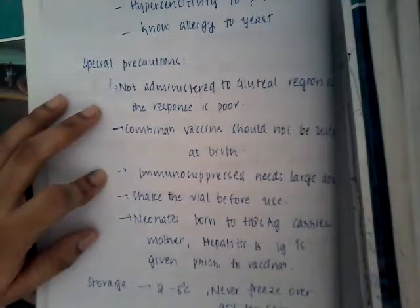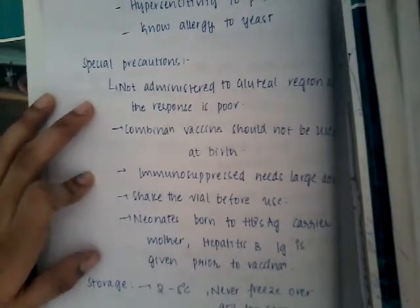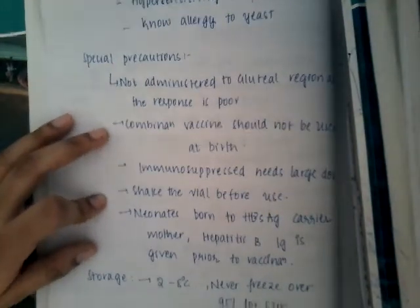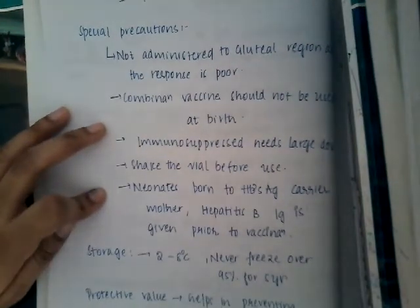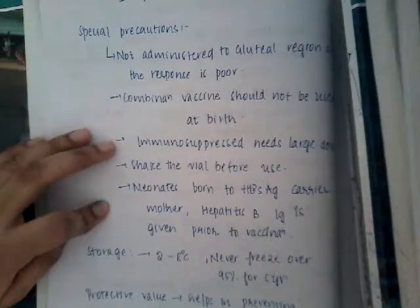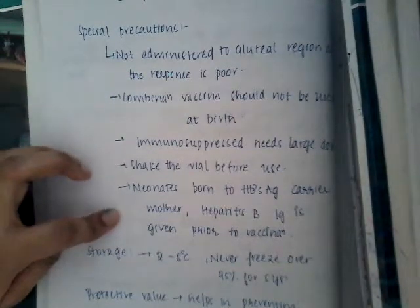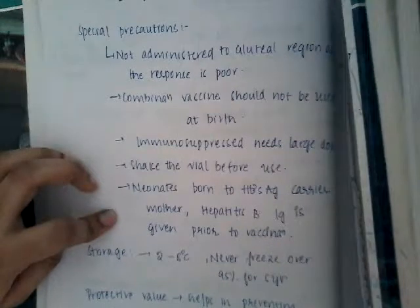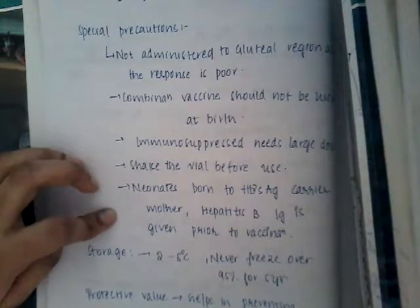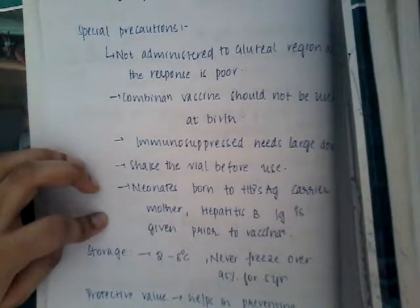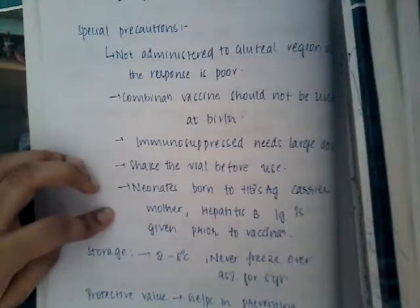In immunosuppressed individuals, higher doses will be required. Always shake the vial before use. In neonates born to a Hepatitis B surface antigen carrier mother, Hepatitis B immunoglobulin is always given prior to vaccination. Always give the neonate Hepatitis B immunoglobulin first, and only after giving the immunoglobulin, give the neonate the vaccine.